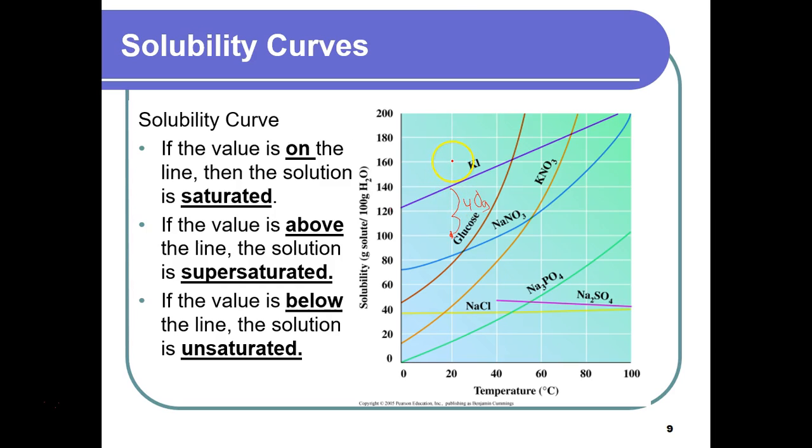If we somehow dissolved 160 grams in 100 grams of water, that's what we call supersaturated. This is where we would have had to heat up the temperature all the way up to here. And then once we got it there, we could dissolve 160. If I let it cool back down and it's still holding that 160 grams dissolved, that would be supersaturated. Just remember that on the line is saturated, above the line is supersaturated, below the line is unsaturated.